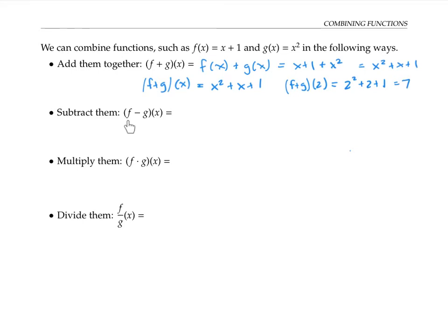Similarly, the notation f minus g of x means the function we get by taking f of x and subtracting g of x. So that would be x plus one minus x squared. And if I wanted to take f minus g evaluated at one, that would be one plus one minus one squared, or one.